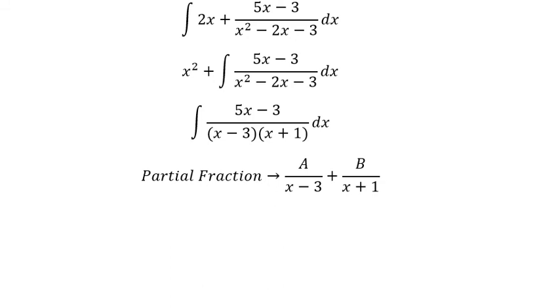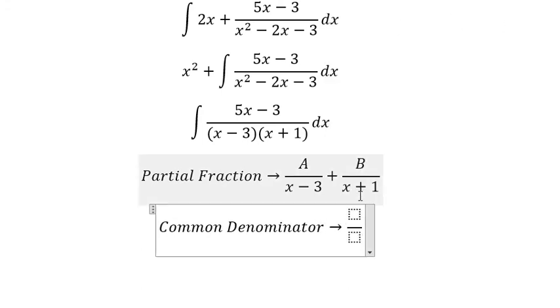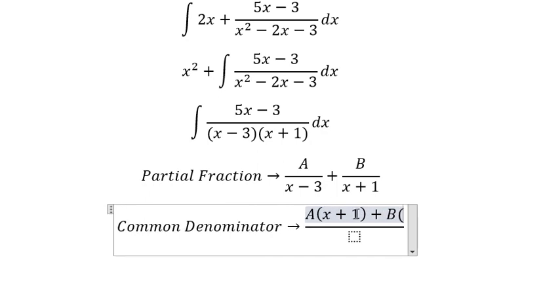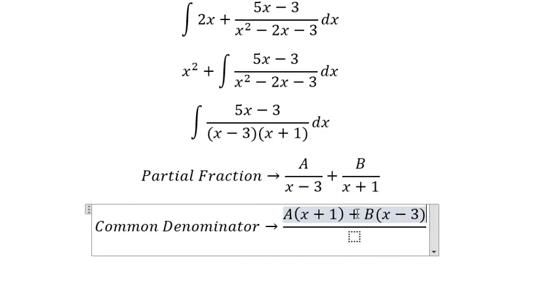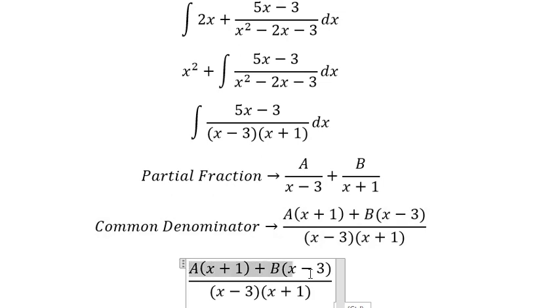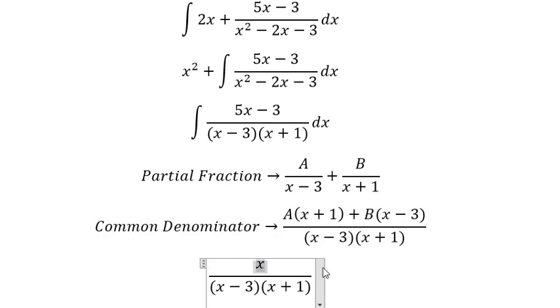We do common denominator. So A multiplies with (x + 1) and B multiplies with (x - 3). We need to arrange based on the power of x. So we get x multiplied by (A + B) and we have (A - 3B).